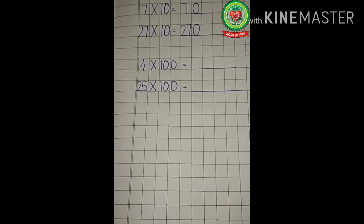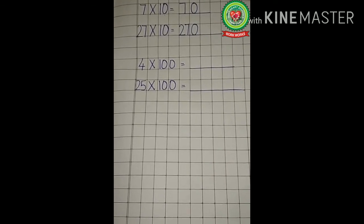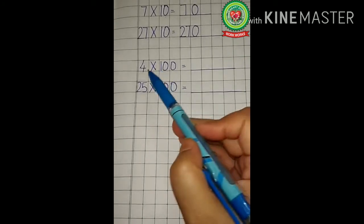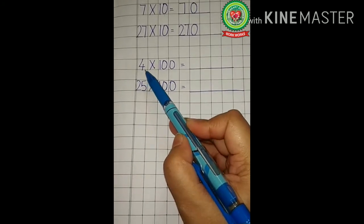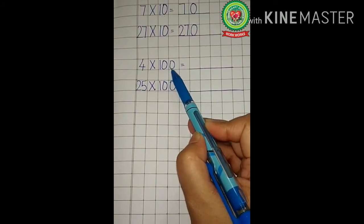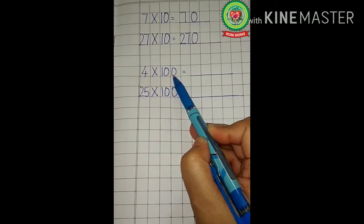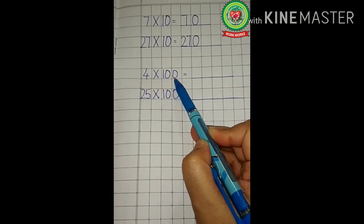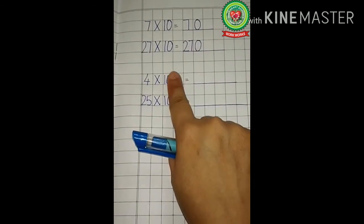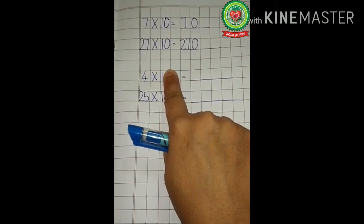Now we will learn how to multiply a digit with 100. Suppose the number given to you is 4 multiplied by 100. We will apply the same rule.